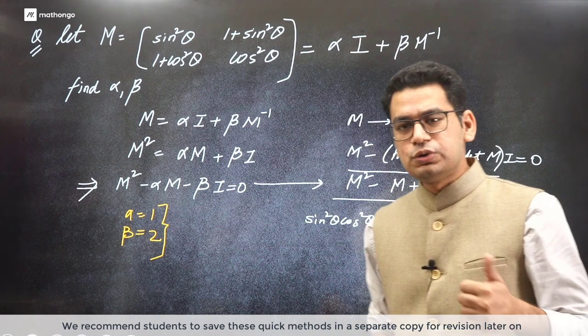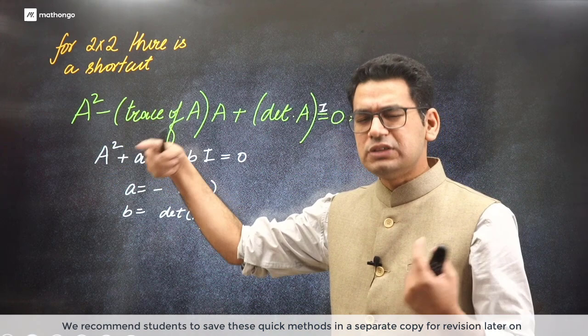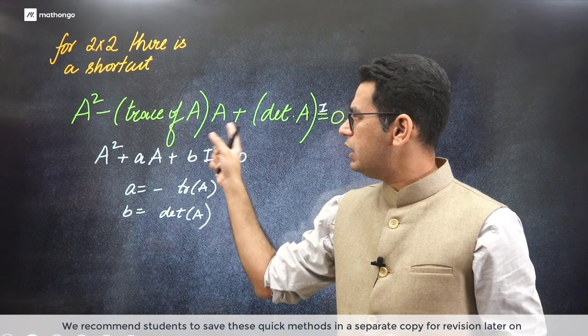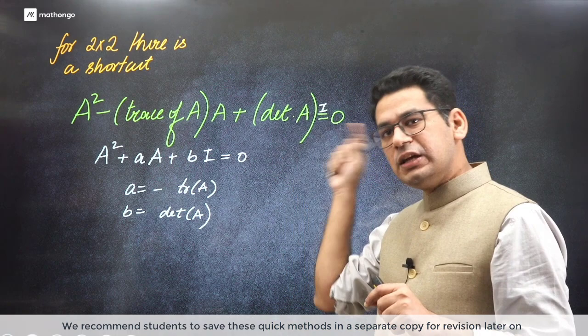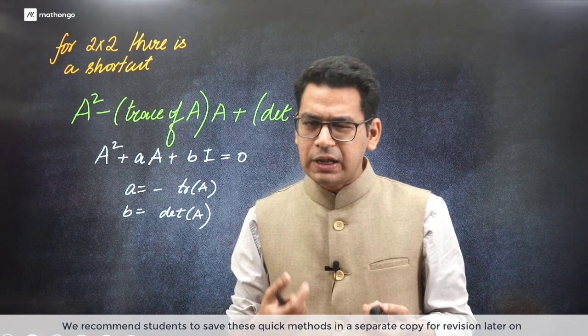Understood? This is 2 by 2. There's also a 3 by 3 example. Let me give you a 3 by 3 example, but generally we don't use that at the IIT JEE level. A cube minus trace of A times A square, and since there's minus I, the next one is plus: plus sum of minors along major diagonal times A minus determinant of A times I. So there's one more process, which we don't use directly. But in 2 by 2 it is really, really beneficial.